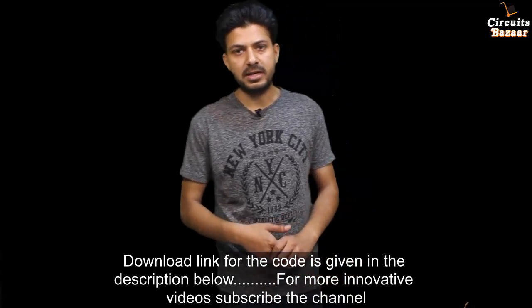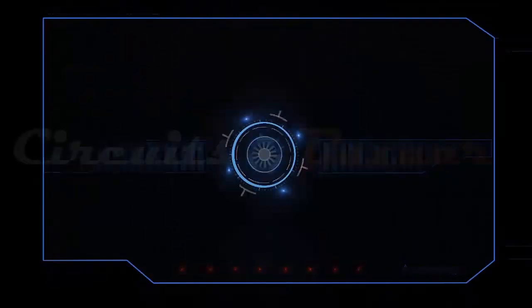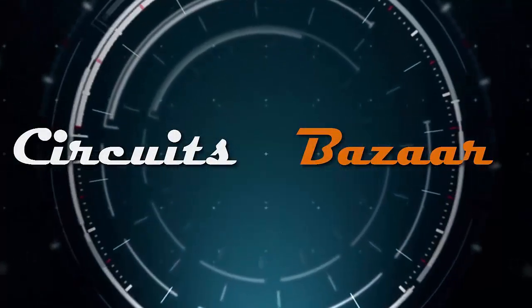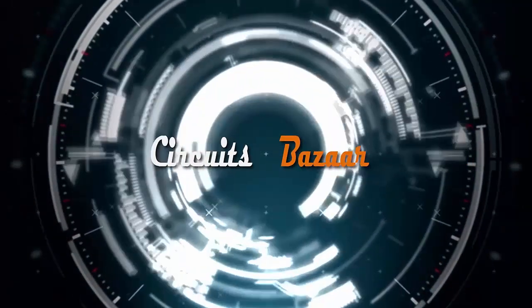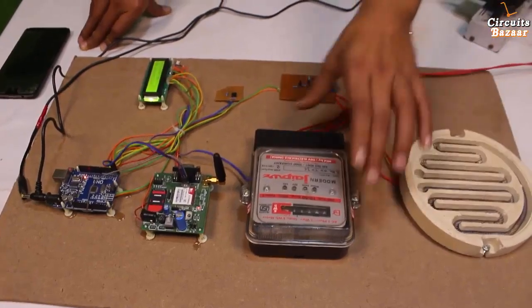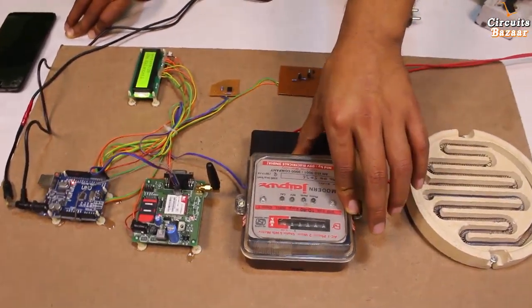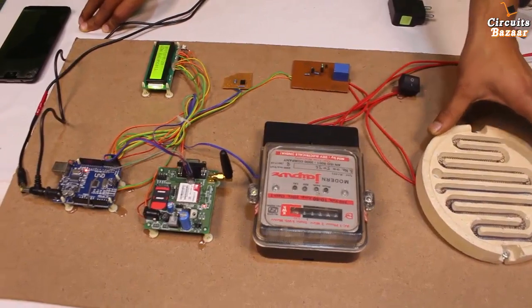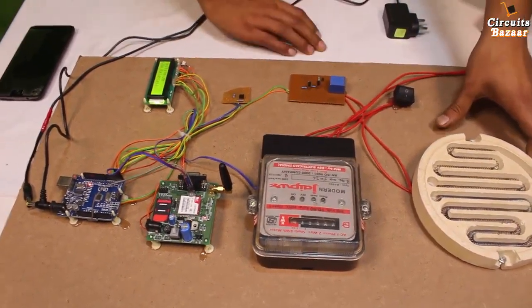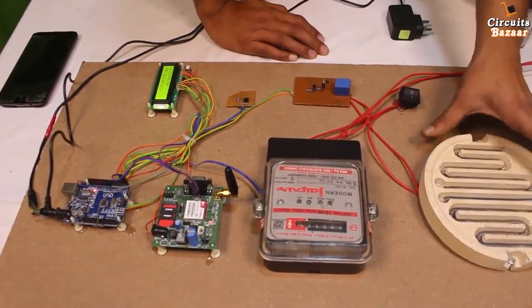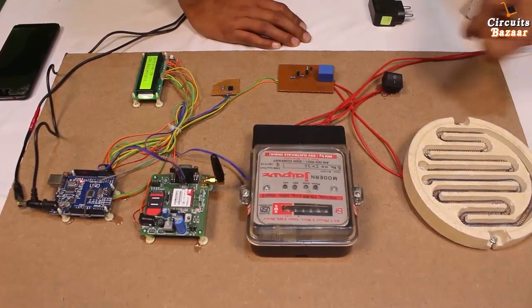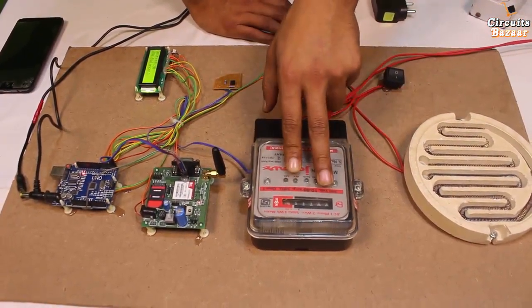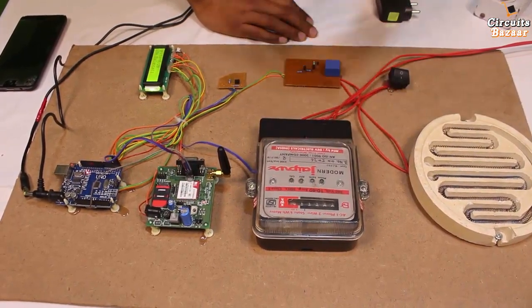So this is our project. Basically, this is the energy meter. This energy meter will note down how much electricity we have consumed. And this is the load. Actually, we have taken a large load over here. This is a very big load so that it consumes electricity very fast. And there will be fast change on the reading of energy meter so that we can immediately see the effect.